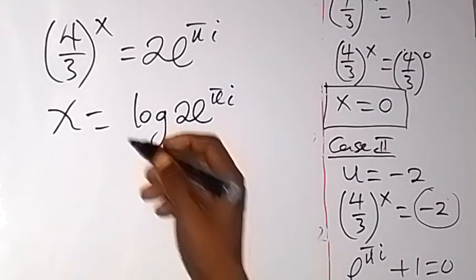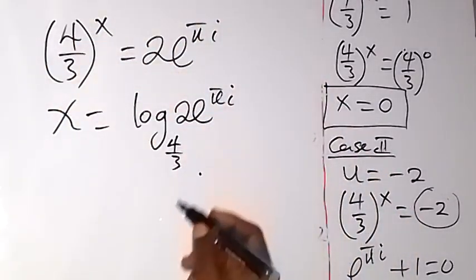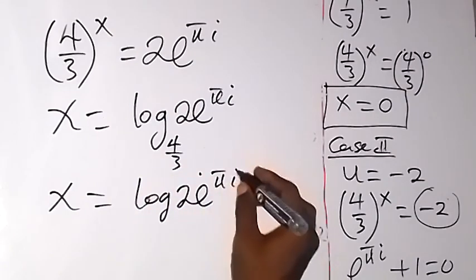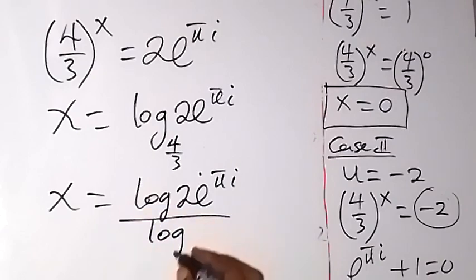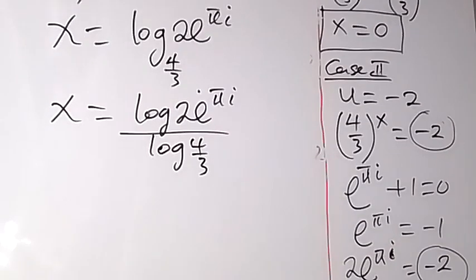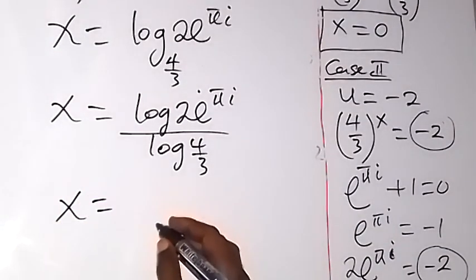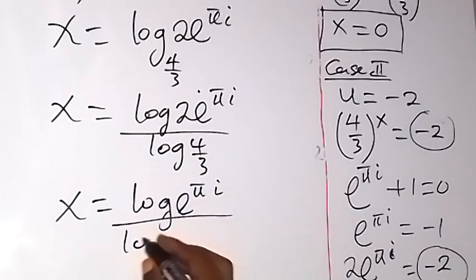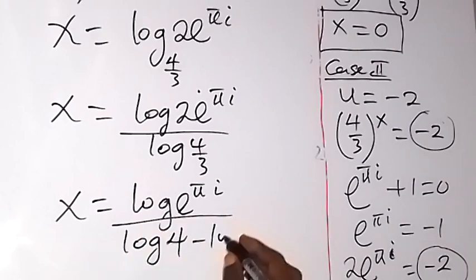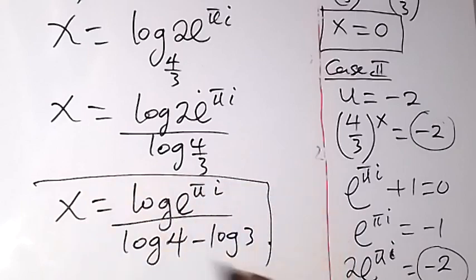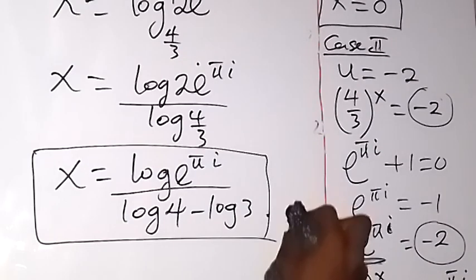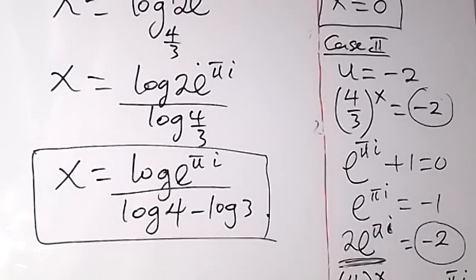Transforming to log form, x can be written as log(2·e^(pi·i)) over log(4/3), which can also be written as log(2·e^(pi·i)) divided by (log 4 minus log 3). This is the second value of x. We have therefore come to the end of this problem. Thank you for joining us — don't forget to subscribe to this channel and turn the notification bell on. See you in the next class, bye for now.